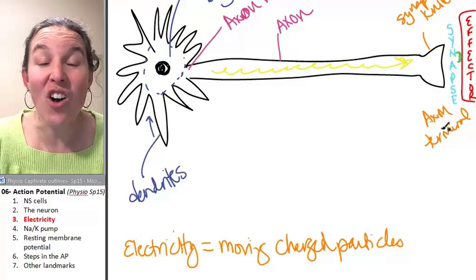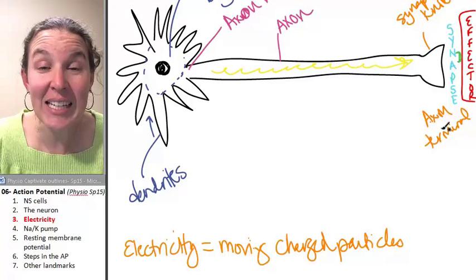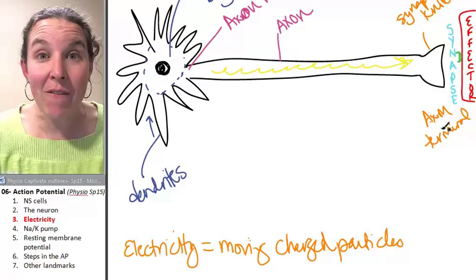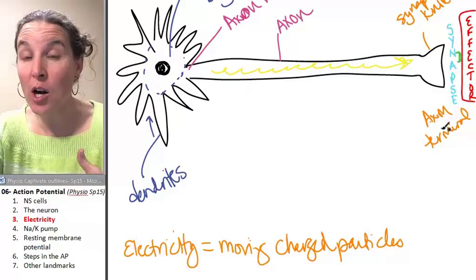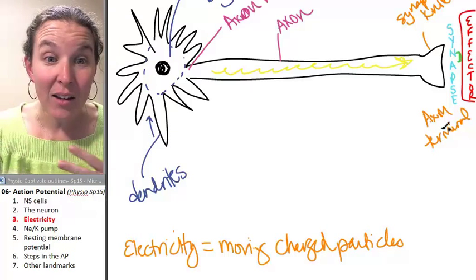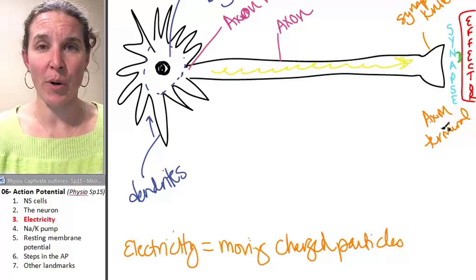And guess what? That's all an action potential is. It's this wave of charged particles moving down the neuron parts.